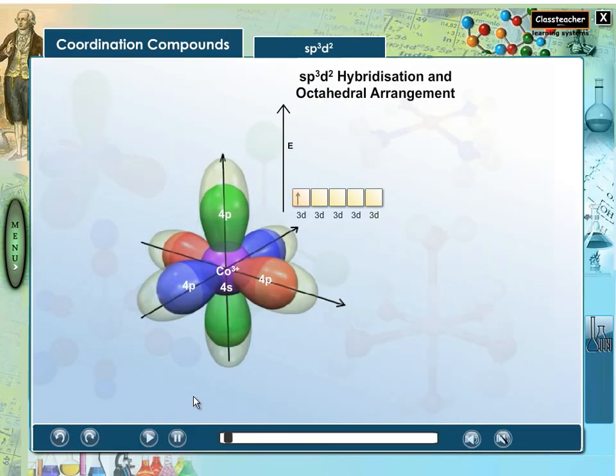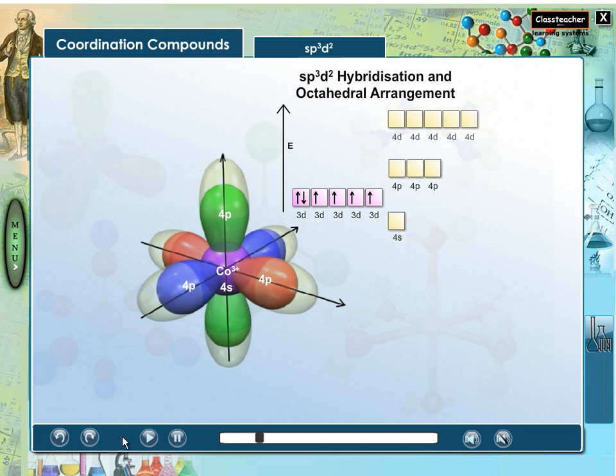In hexafluorocobalt complex, cobalt-3-ion hybridizes 4s, 4p, and two of the 4d orbitals to form 6sp3d-2 orbitals and three unhybridized 4d orbitals remain empty.